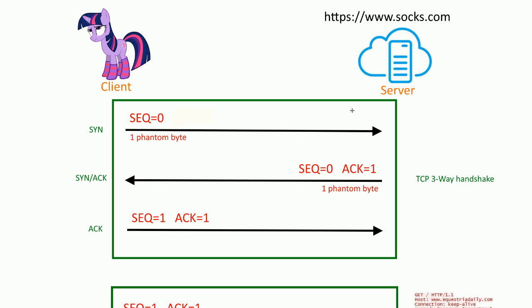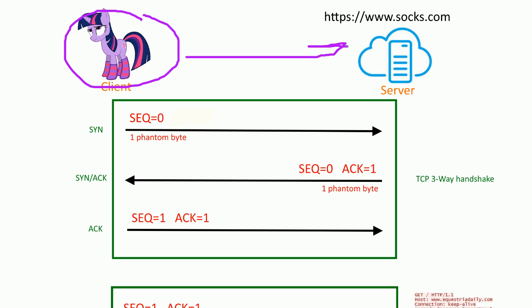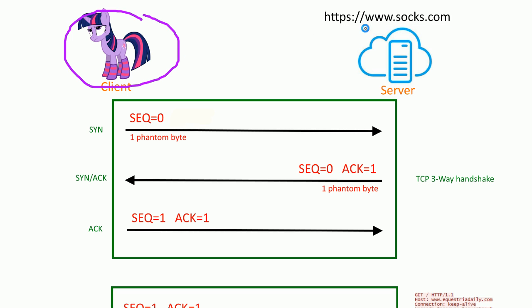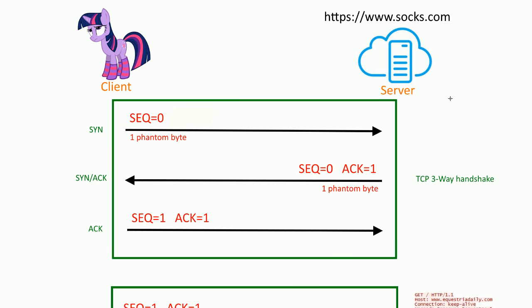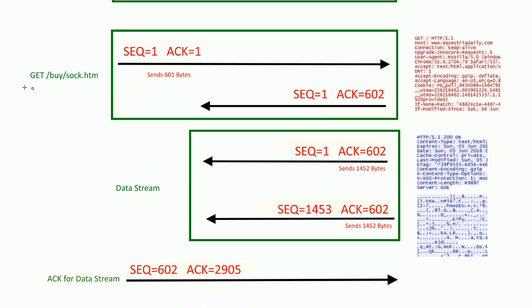Let's jump right into it. We have a client who wants to buy lots of socks — it's the new hip thing — so she goes to socks.com. It's encrypted because we need to keep our socks a secret. First DNS happens so we get an IP address, and then we set up a TCP session with the server using the three-way handshake, which was covered in the previous video.